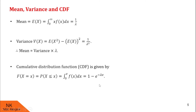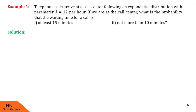Now let us proceed with some examples. In this first example, we are given that telephone calls arrive at a call center following an exponential distribution with parameter lambda = 12 per hour. If we are at the call center, what is the probability that the waiting time for a call is: (1) at least 15 minutes, and (2) not more than 10 minutes?